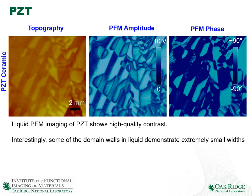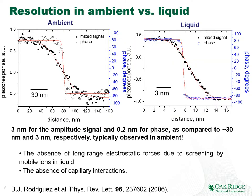This is a third example of PCT ceramics where we have a beautiful PFM image in liquid. What's really important is that if we look at the data, we observe that some of the domain walls had abnormally high resolution — equivalently, abnormally low width. In air, the domain wall width is typically 30 nanometers; in liquid, the domain wall width is about 3 nanometers, and the information limit or width of the phase signal is only 2 angstroms. We speculated this happened due to the absence of long-range electrostatic forces and the absence of capillary interactions in liquid, allowing us to boost spatial resolution.